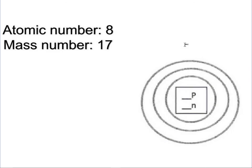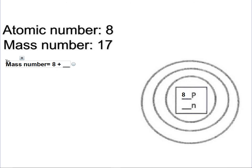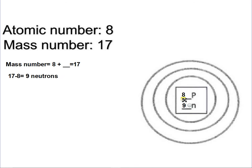In this one you're given that the atomic number is eight, the mass number is 17, and you have to figure out the element and the number of protons. The atomic number tells you the number of protons, so I'm going to put in eight. To figure out the number of neutrons, since the mass number equals protons plus neutrons, I can say 17 equals eight plus some number we don't know. You take 17 minus eight equals nine, so you should have nine neutrons.